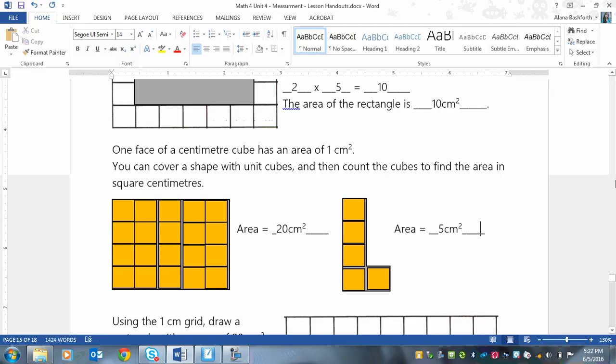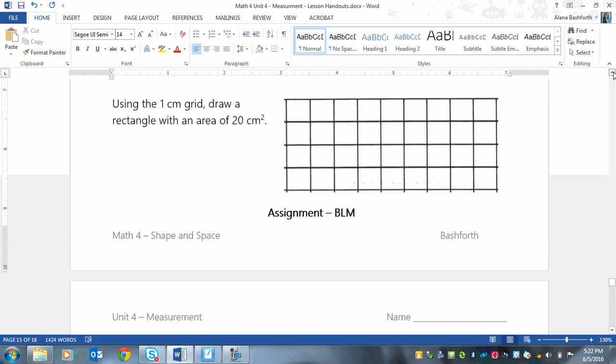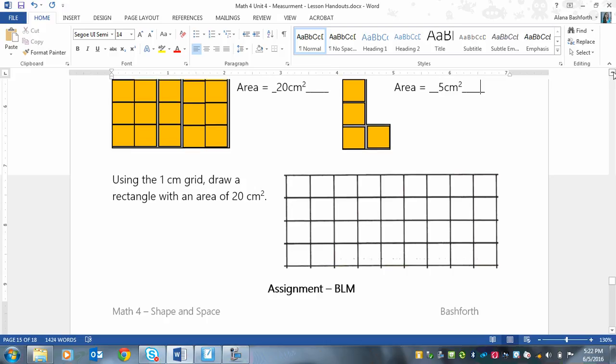The next thing is using one centimeter grid paper, draw a rectangle with an area of 20 centimeters. At this point, you need to pause the video and see if you can draw a rectangle in this, and it has to fit in this grid with 20 centimeters cubed as the area. So pause the video now.